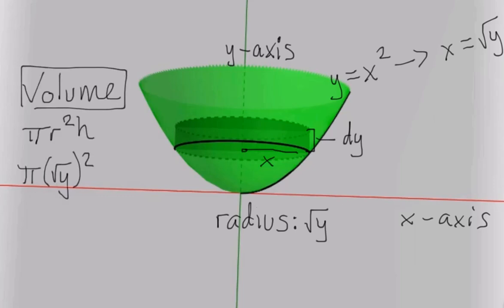Again, the volume of a disc is pi r squared h. Once we substitute our variables, boom, we have the volume of a disc in terms of y.